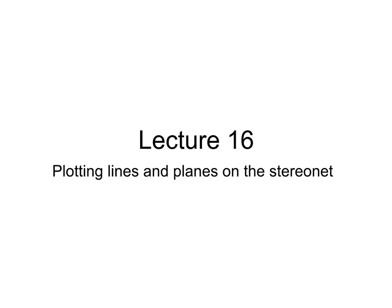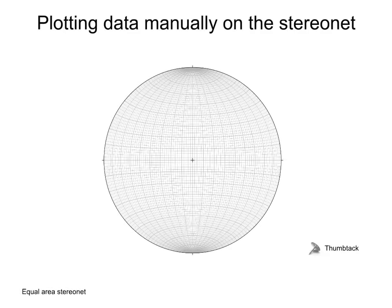Lecture 16: Plotting Lines and Planes on the Stereonet. To plot data manually on a stereonet, you will need a hard copy of the stereonet, in our case an equal-area stereonet, and a thumbtack.